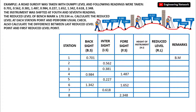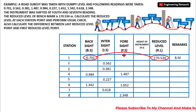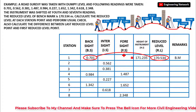At station 1, the reduced level is 170.534, which is the benchmark. The height of instrument (HI) formula is: reduced level plus backsight. So HI at station 1 equals 170.534 plus 0.701, giving a height of instrument of 171.235 meters.